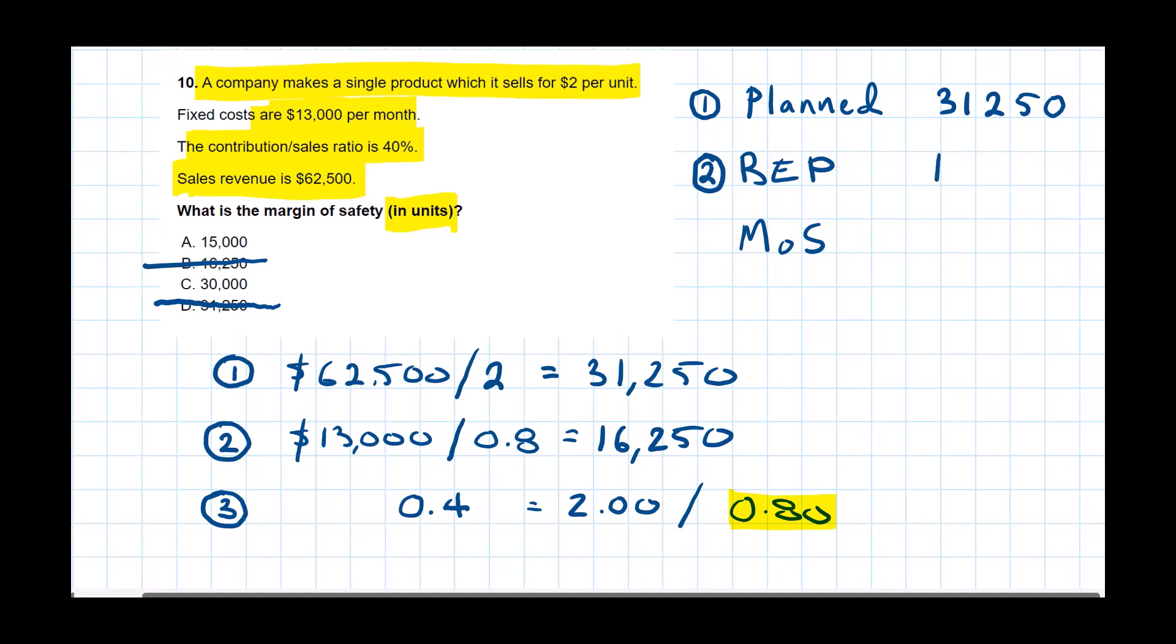So what I've got to do, then, is subtract 16,250 from the planned activity level. And margin of safety, then, is 15,000 units. That is the answer to this question. The answer is A.